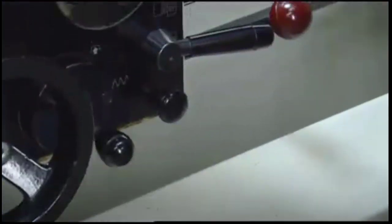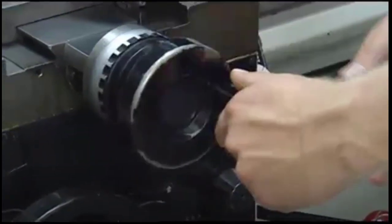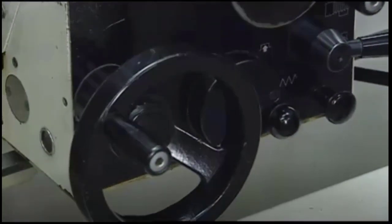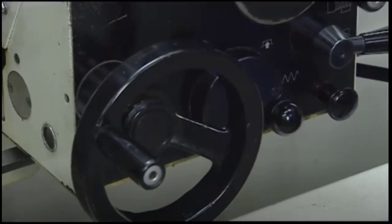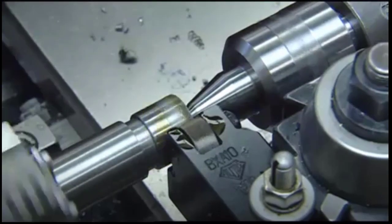If you're using a bump-style knurling tool, crank the cross-slide hand wheel swiftly to bring the rollers into contact with the work. Then, turn the hand wheel about another 10 thousandths and immediately engage the carriage feed.